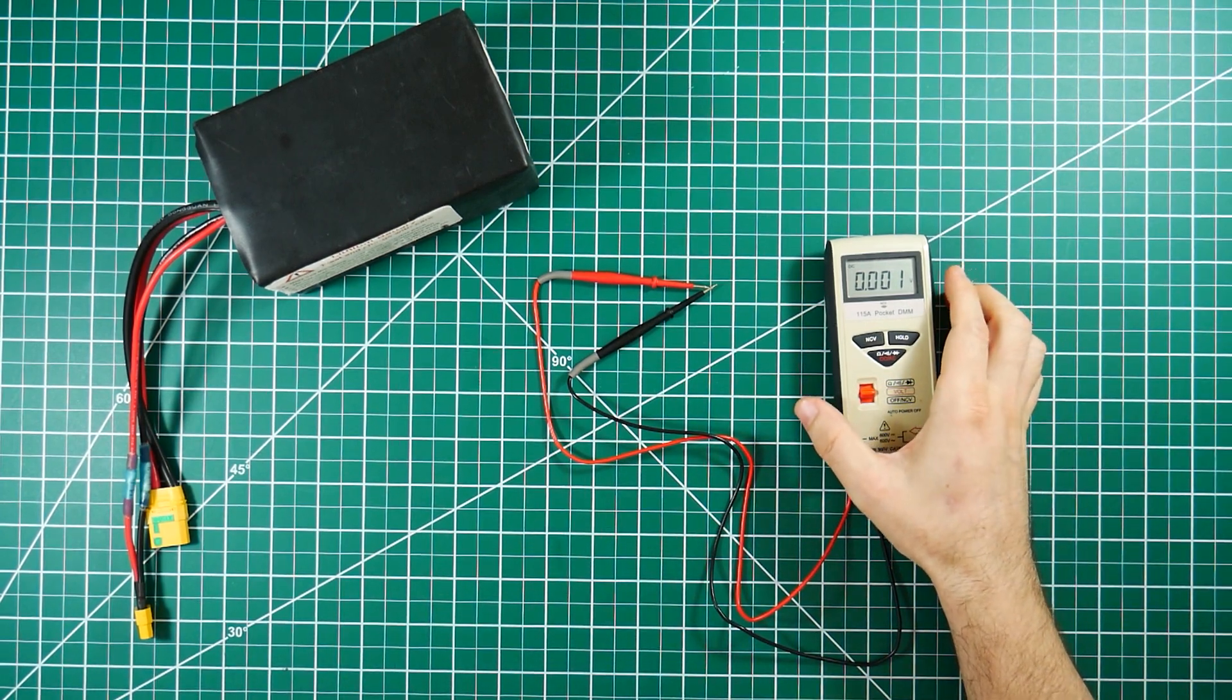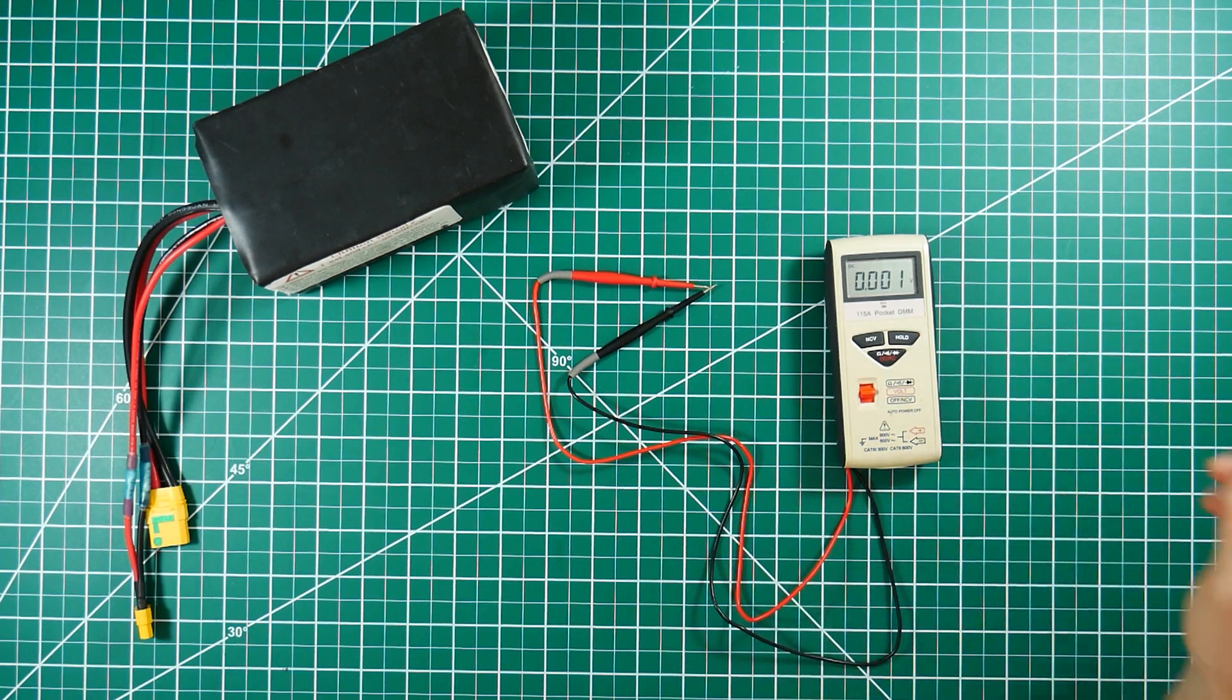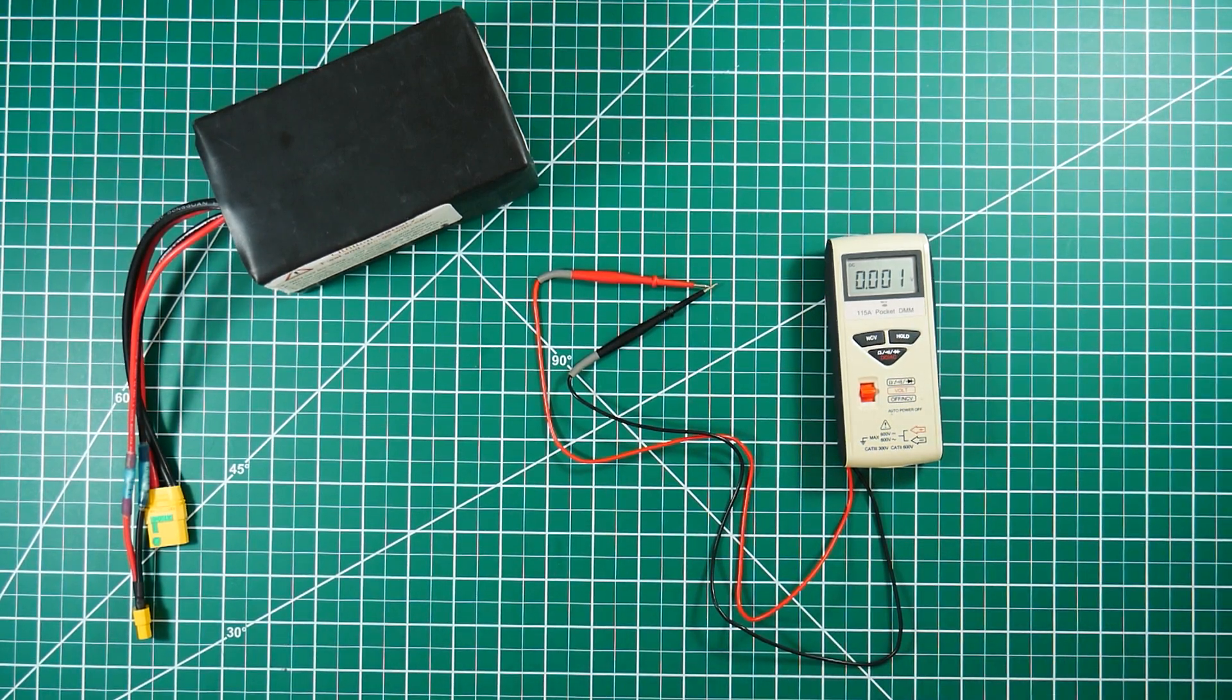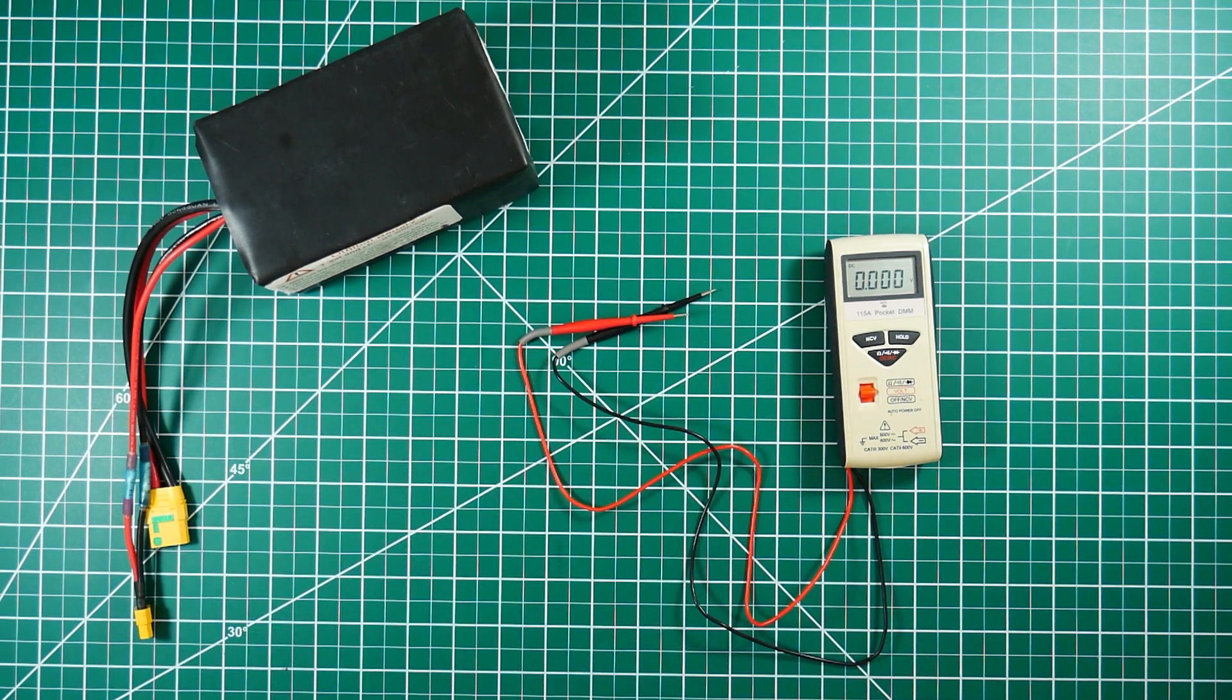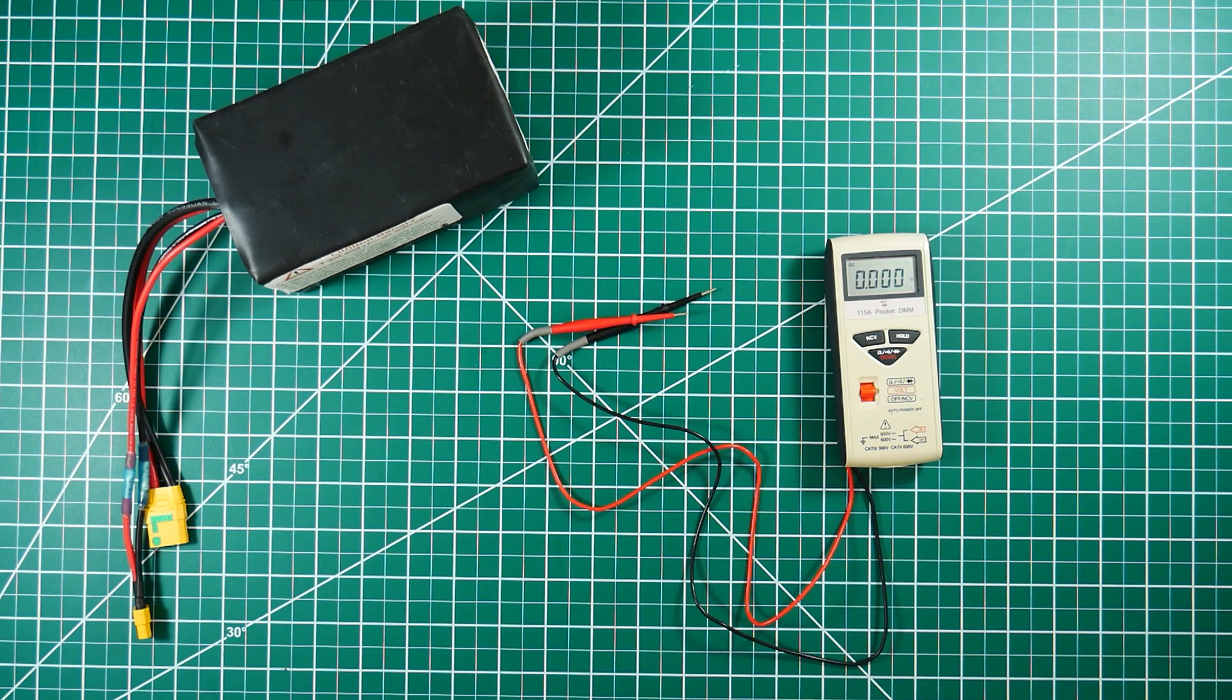On some of the more complex ones you might need to change around the setting a little bit, but it's pretty obvious. If you don't have it on the right one it's either not going to show the voltage or it's going to show a wildly different number than you expect.